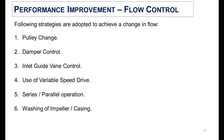The following strategies are adopted to optimize the flow of a fan or blower: first, pulley change; second, damper control; third, inlet guide vane control; fourth, use of variable speed drive; fifth, series or parallel operation of fans or blowers; and sixth, the washing regime of the impeller or blower casing.